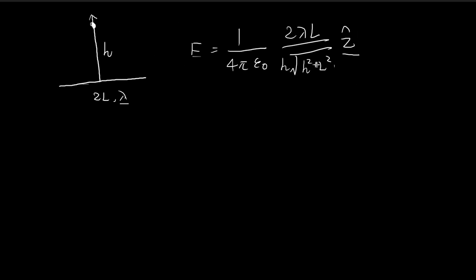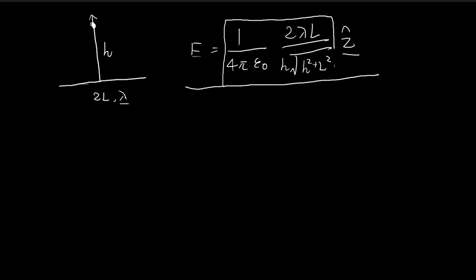Griffiths showed us how to derive this result earlier in the book. In that example, there was a line charge with charge density lambda. It had a length of 2L, and at a distance h away from the center of this line charge, the electric field at that point is equal to a specific expression — this gives the magnitude and this gives the direction, pointing in the z direction, upwards.